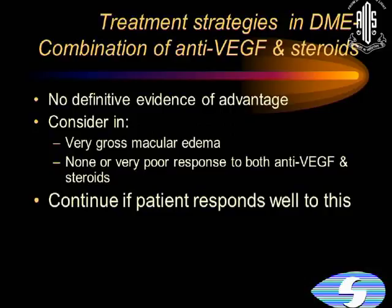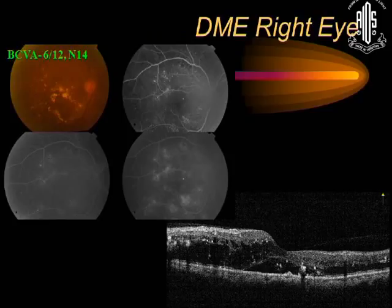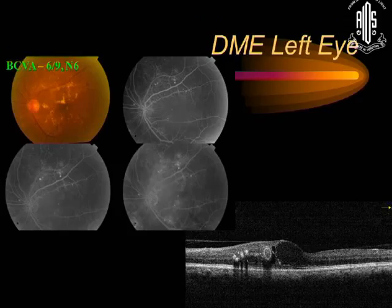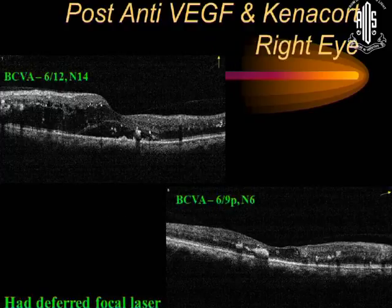Combination therapy is sometimes used; we often use it but there is no definitive evidence of a proven advantage in larger studies. We consider it in very gross macular edema or if there is poor response to both anti-VEGF and steroids. Here we have a DME patient whose OCT clearly shows thickening in both eyes. He had received multiple anti-VEGF injections and steroids. We gave a combination followed by deferred focal laser, and the patient responded well, maintaining both reduction in macular edema and visual acuity.